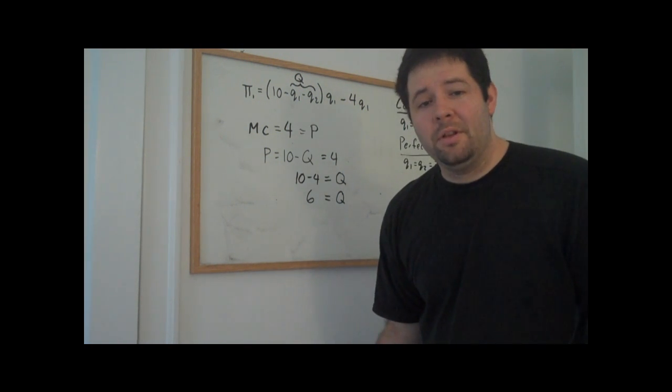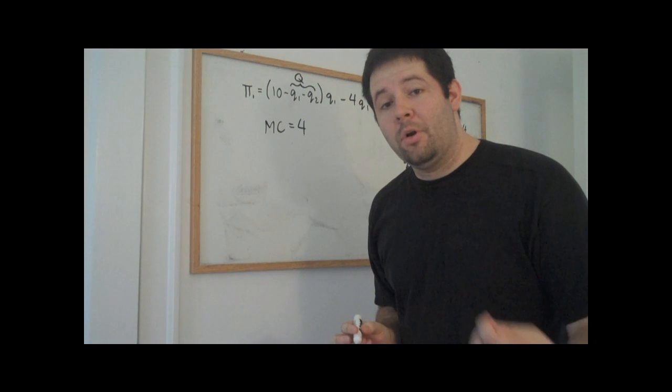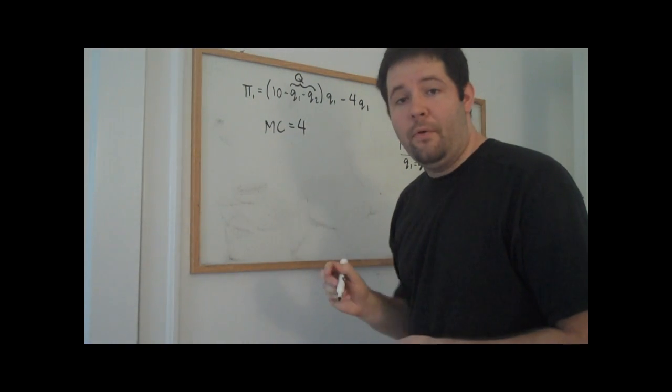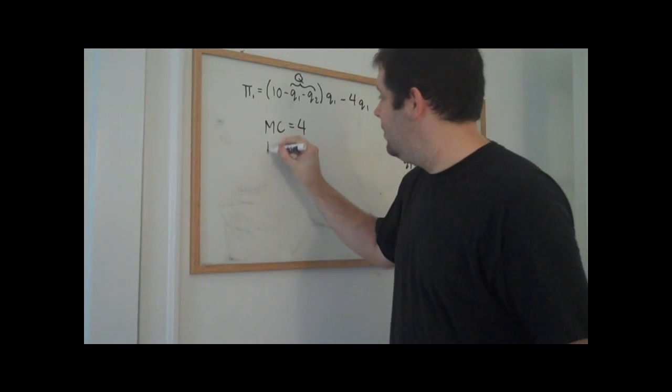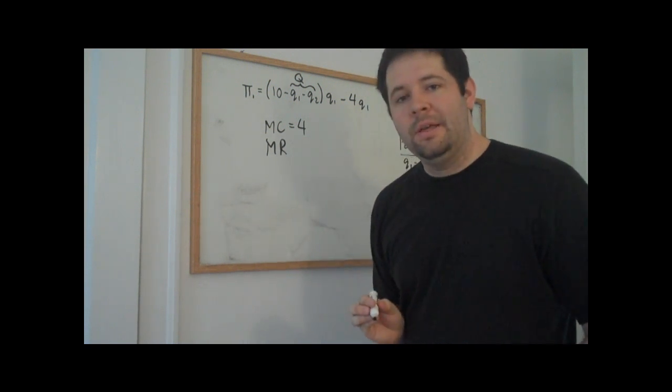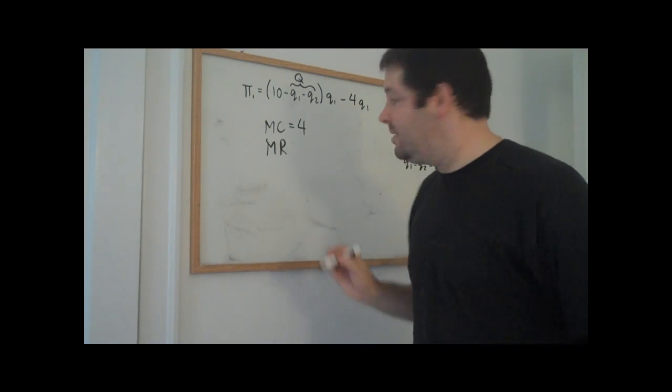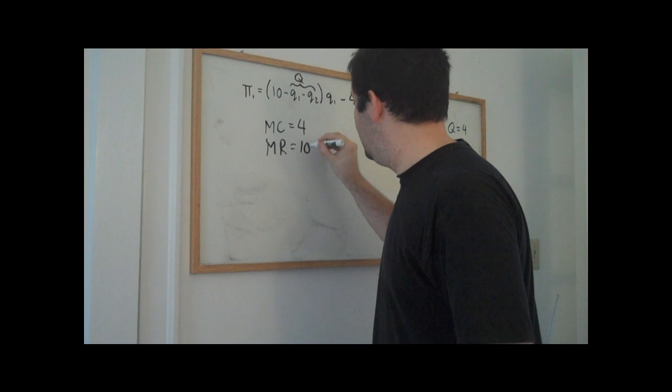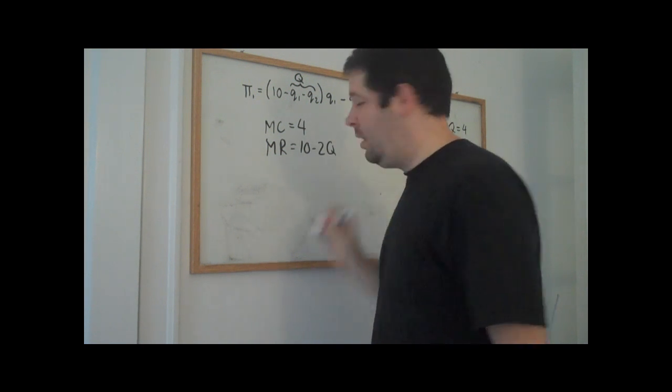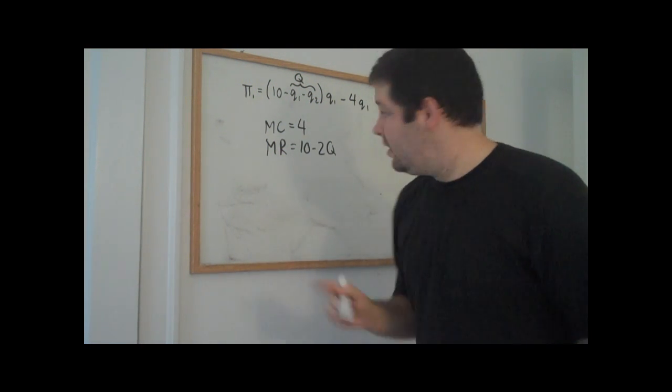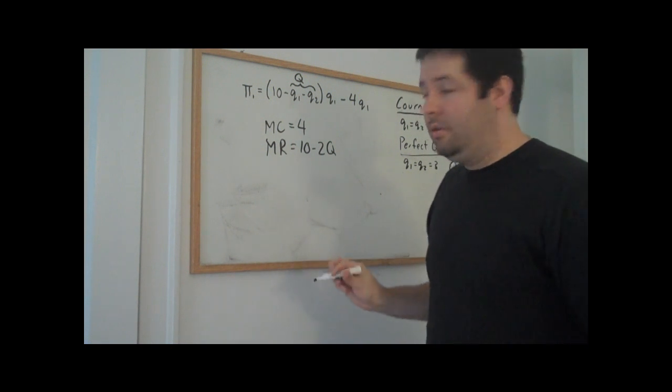What does a monopoly do in this setting? Remember our marginal cost is equal to four, and monopoly has a marginal revenue equal to the same intercept, but twice the slope of the demand curve.